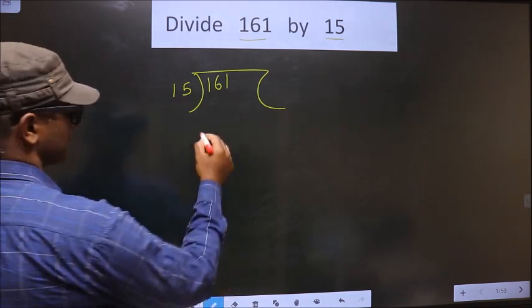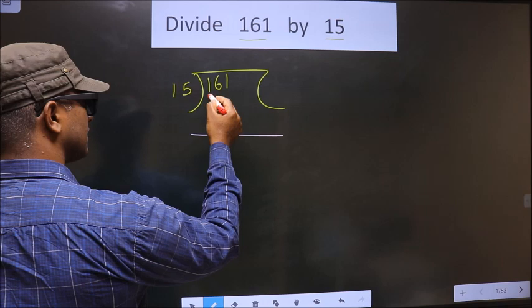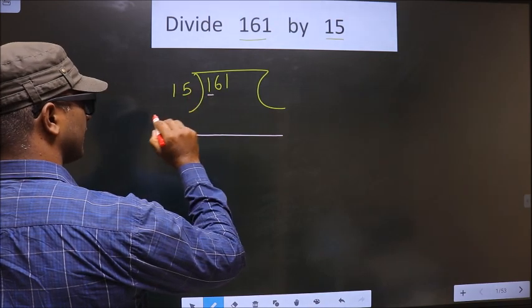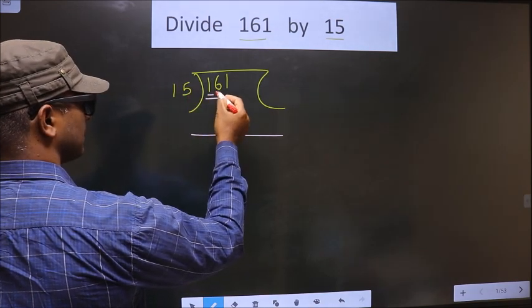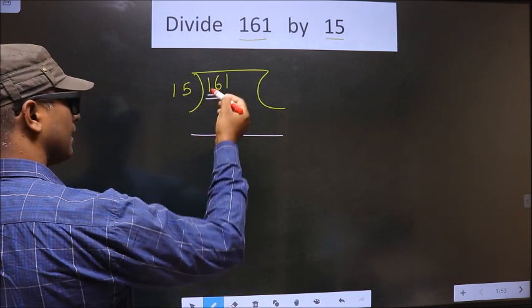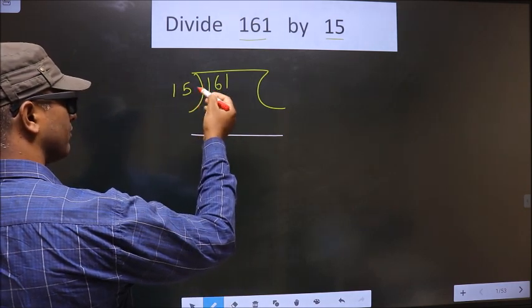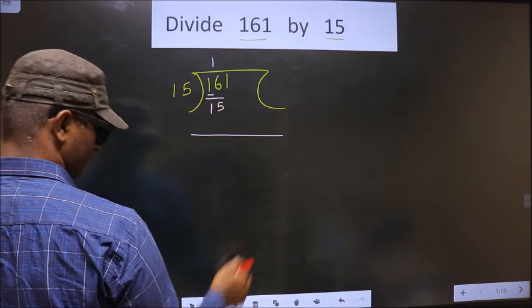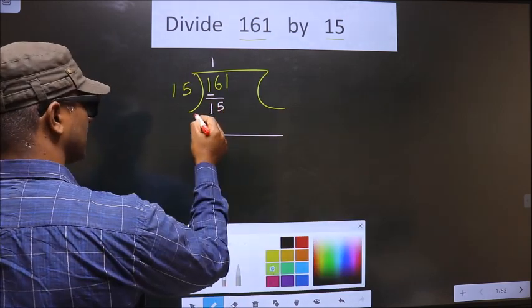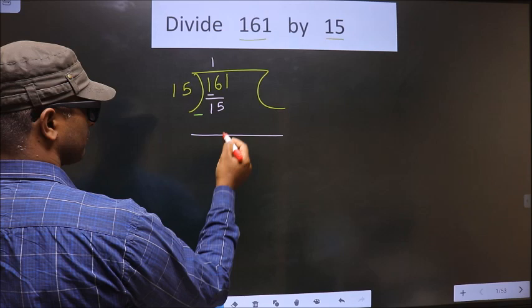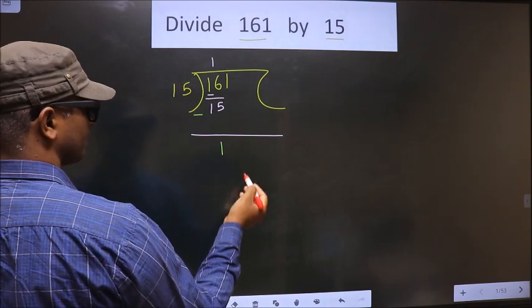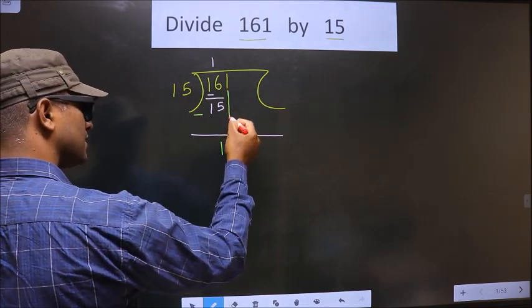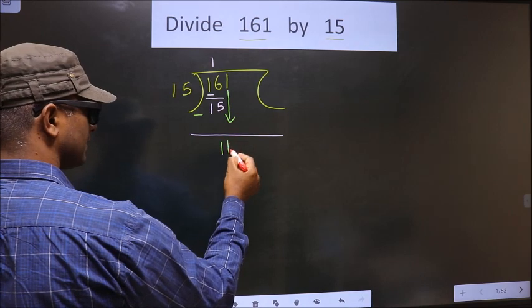Next. Now, here first number is 1. 1 is smaller than 15, so we take two numbers, that is 16. A number close to 16 in the 15 table is 15 once, 15. Now, you should subtract. So 16 minus 15 is 1. Now you bring this number down, which is 11.